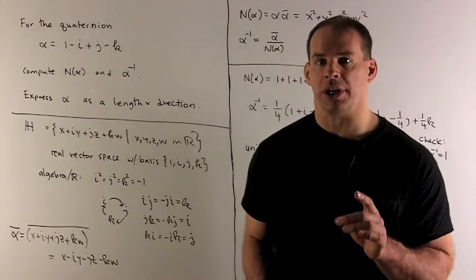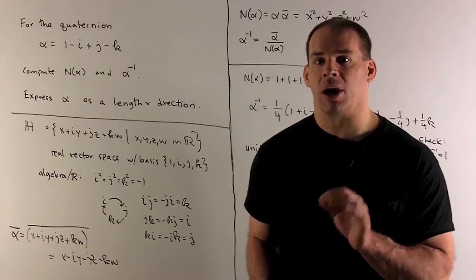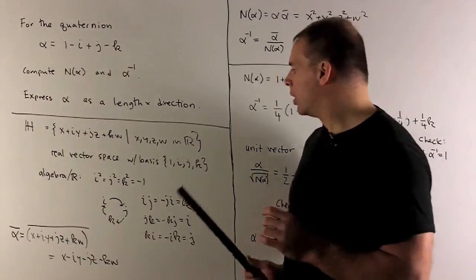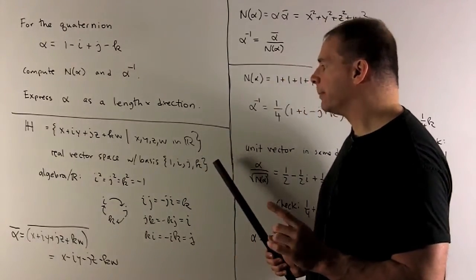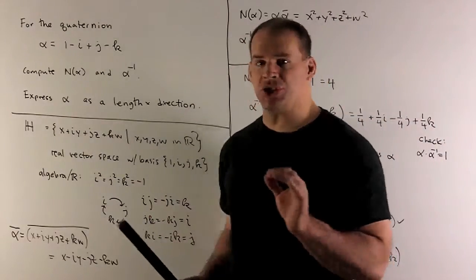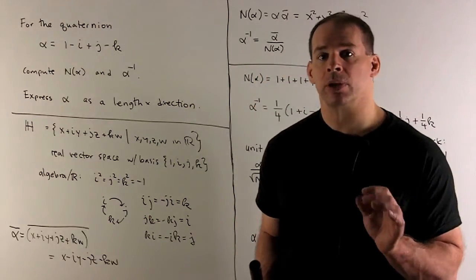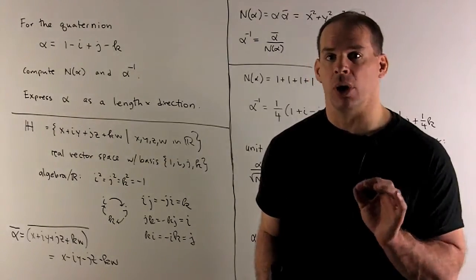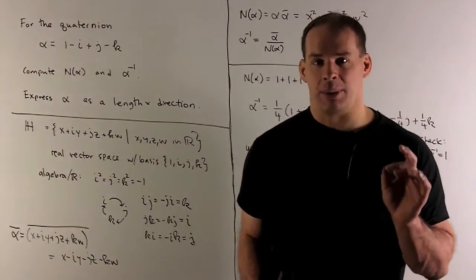So quaternions. As a set, quaternions are going to be a real four-dimensional vector space. We'll have basis 1, i, j, k. So the general quaternion looks like x plus iy plus jz plus kw, where x, y, z, and w are real numbers. So if you know it, we're trying to extend the complex numbers here.